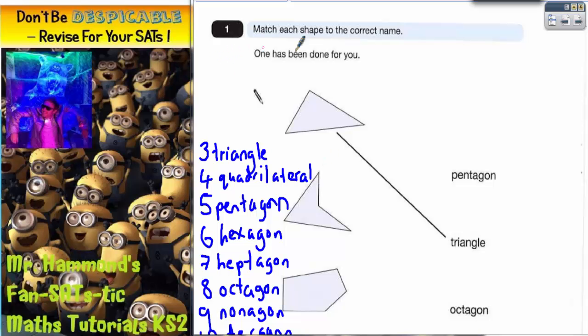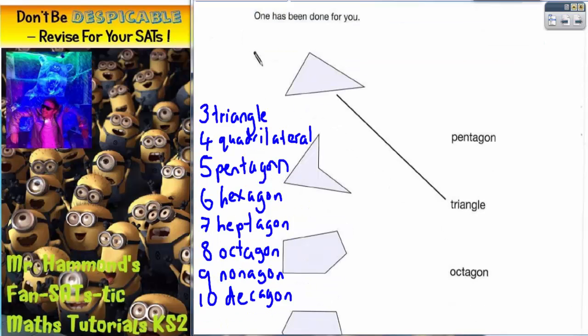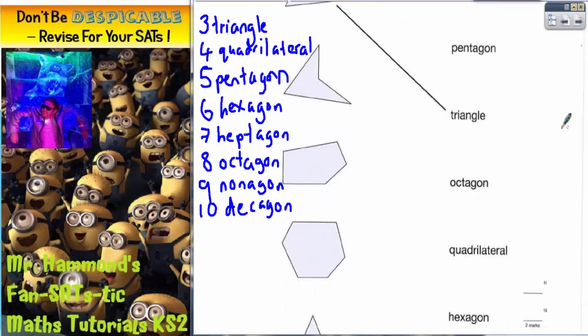Question number one says, match each shape to the correct name, one has been done for you. Now to save a little bit of time, I've already written down the names of the shapes and the numbers of sides that that shape has got.